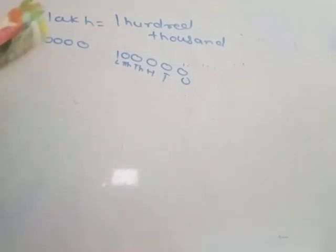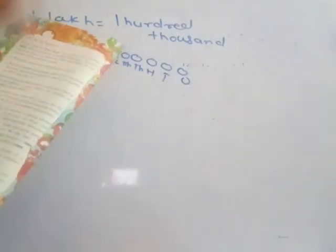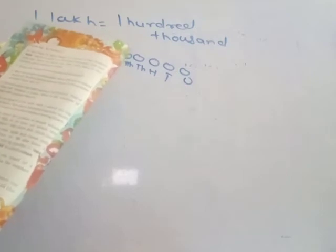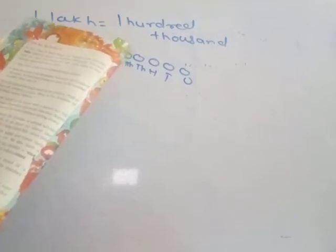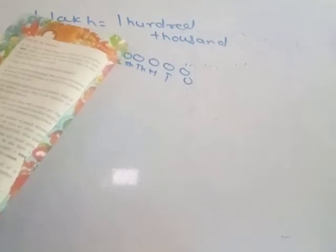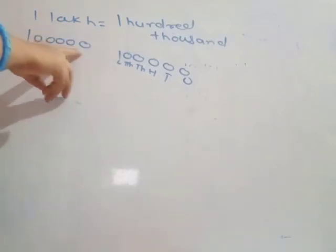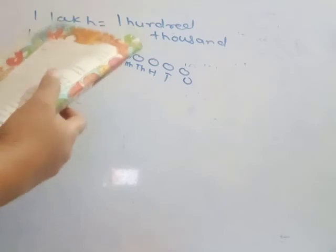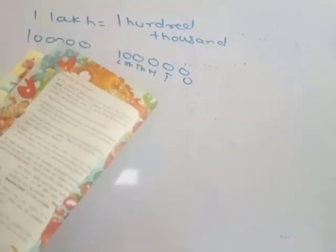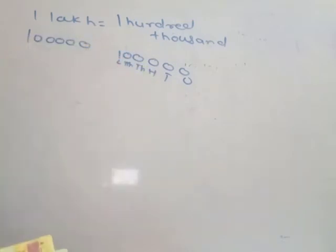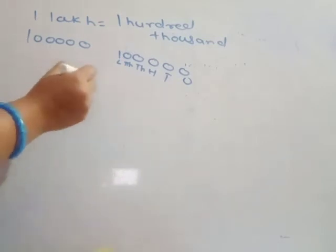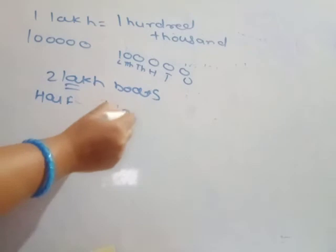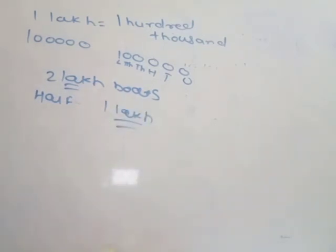You have read that there are about 1 lakh brick kilns in our country. There are about 2 lakh boats in our country, and half of them are without a motor. Half of 2 lakhs is 1 lakh. So 1 lakh boats in our country are without a motor.